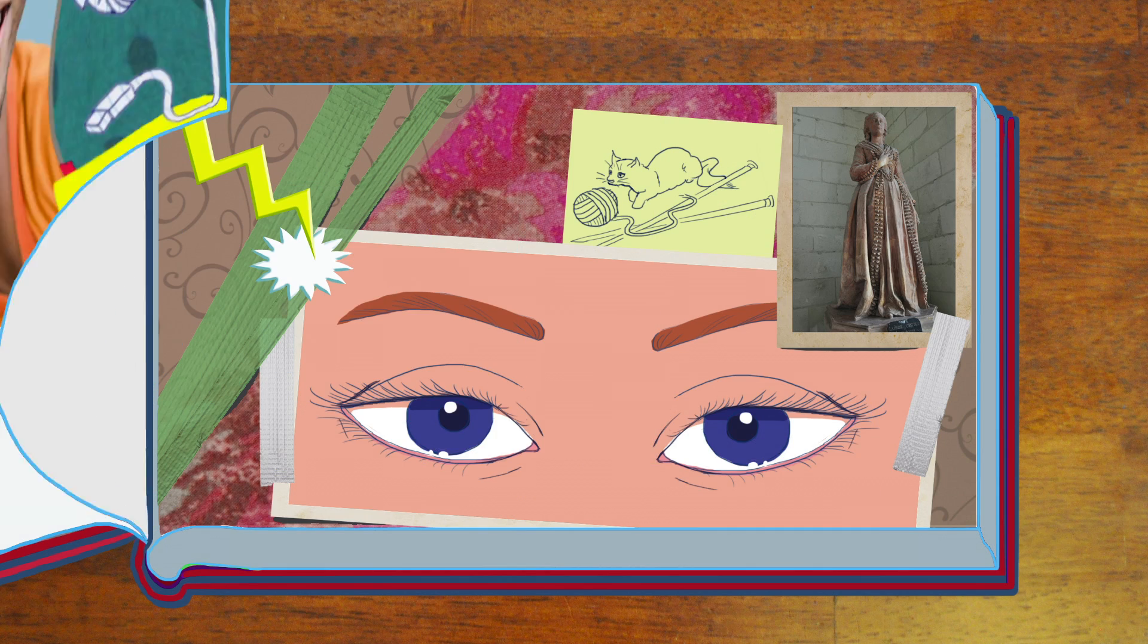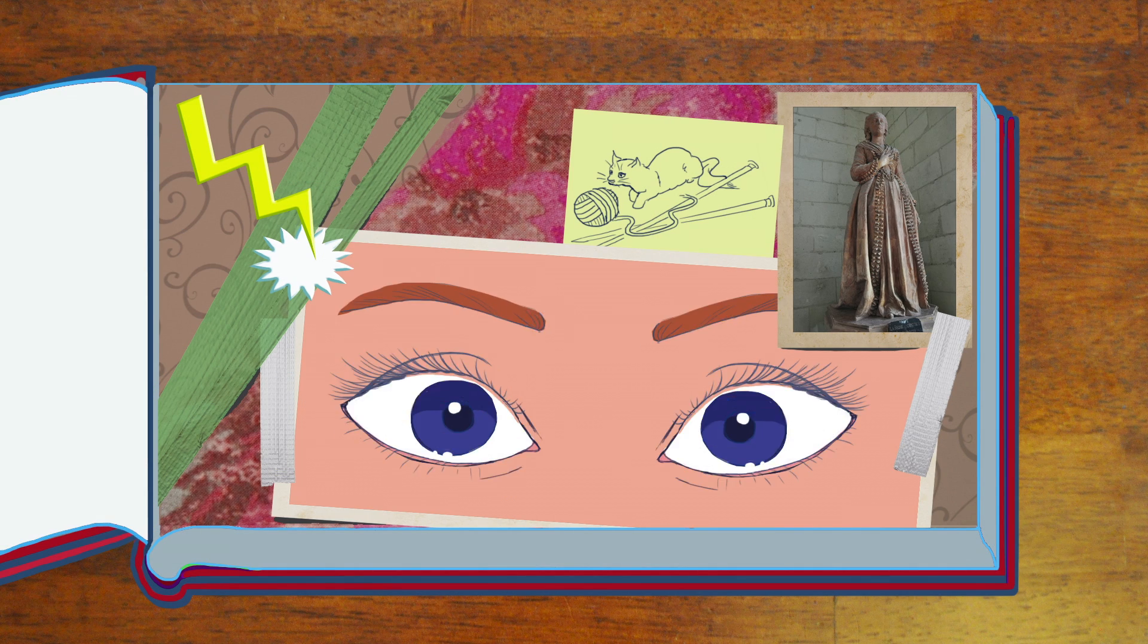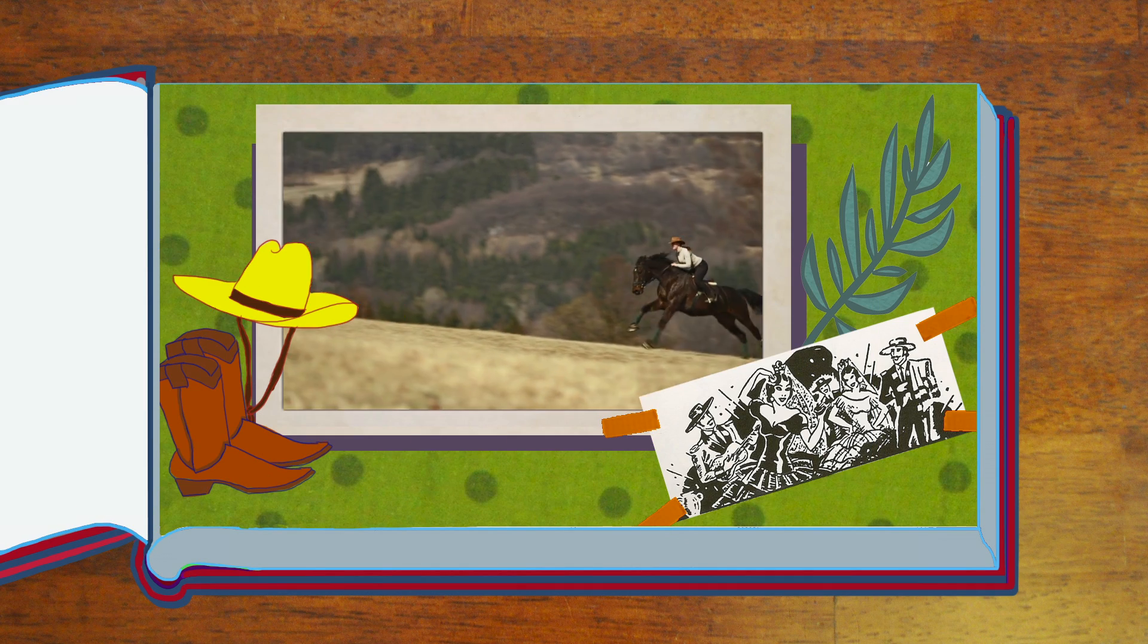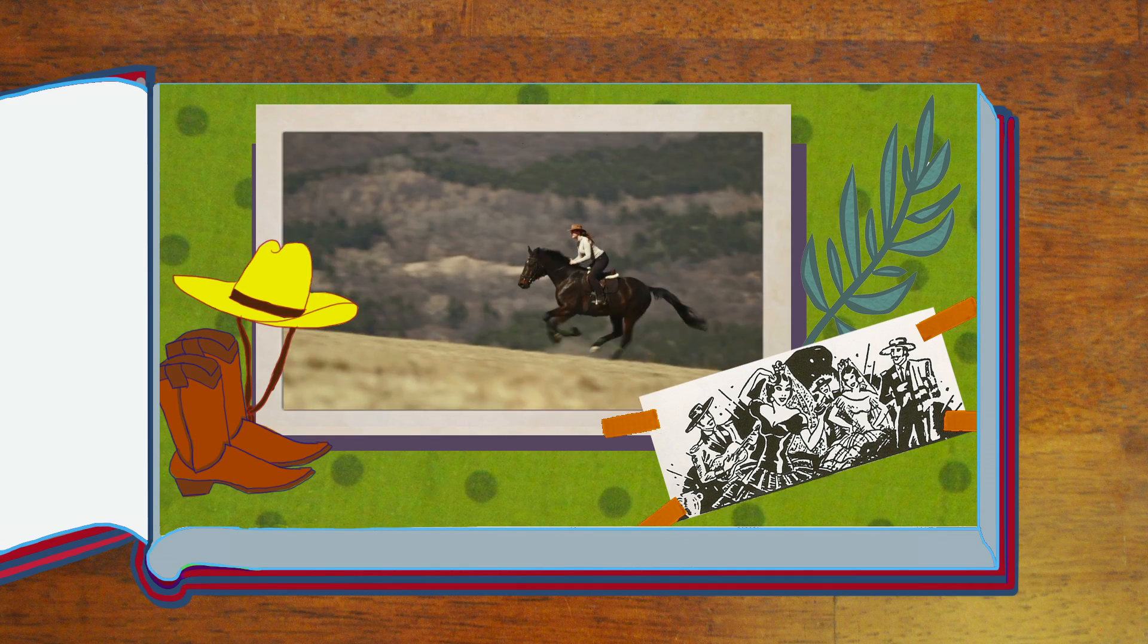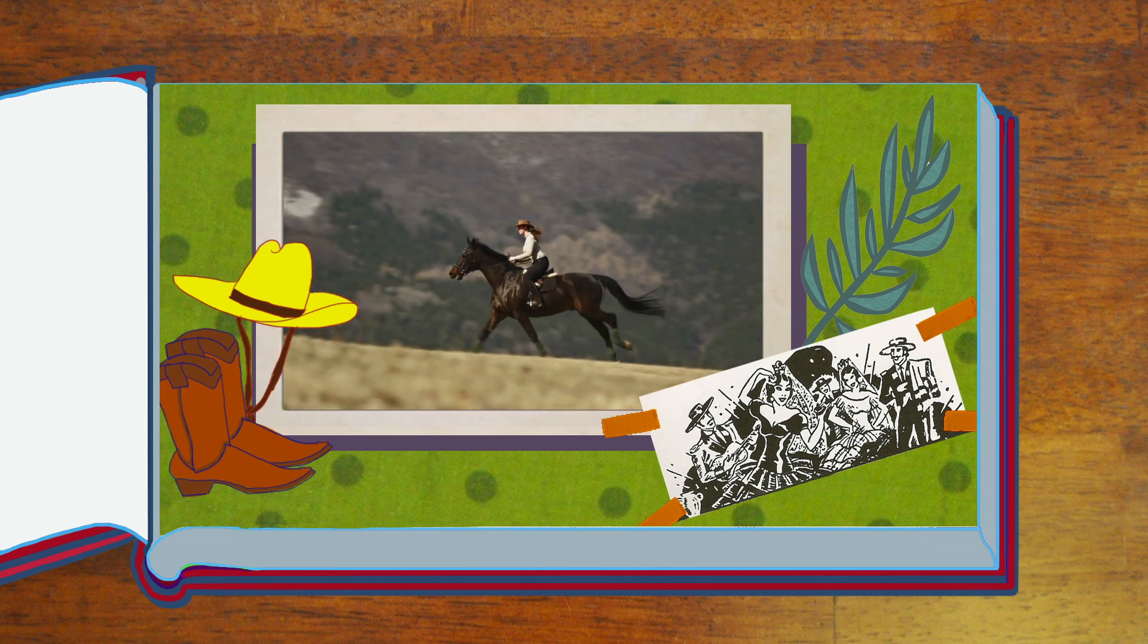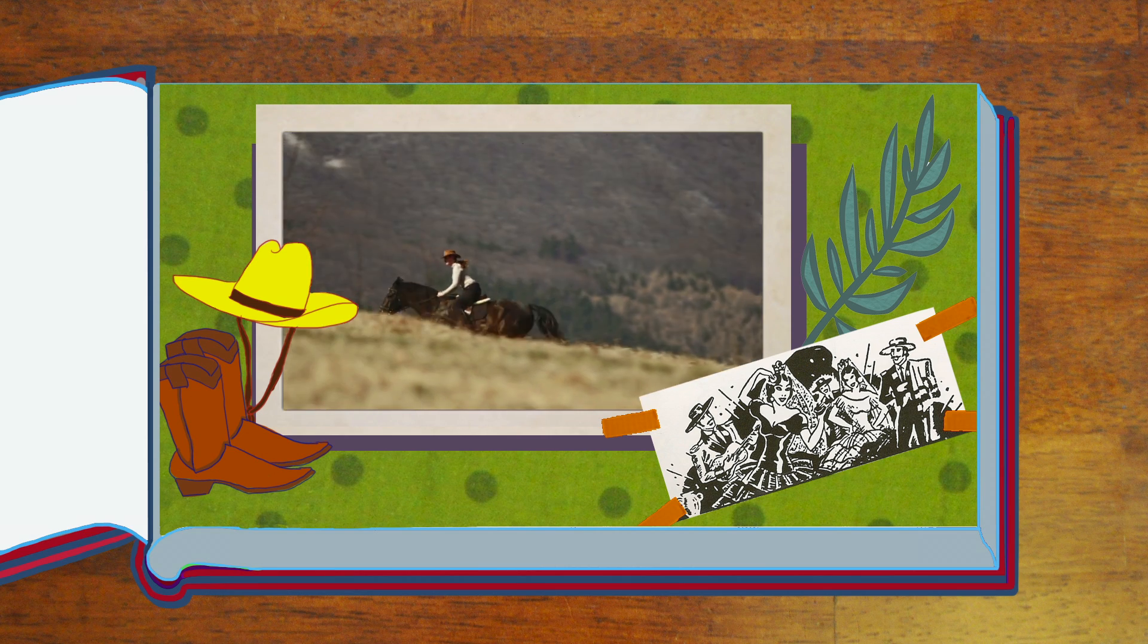But there are things that, despite looking really hard, we still can't quite see. For example, you can watch a horse galloping, but your eyes can't keep up with its fast-moving hooves enough to figure out whether all four feet are ever off the ground simultaneously.